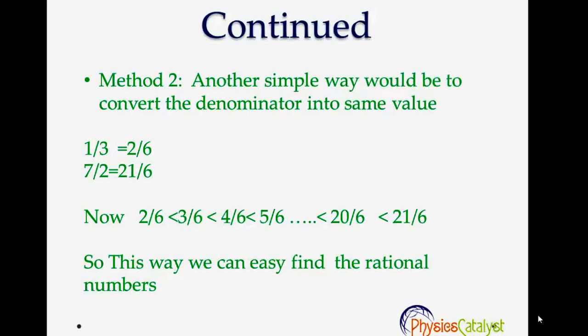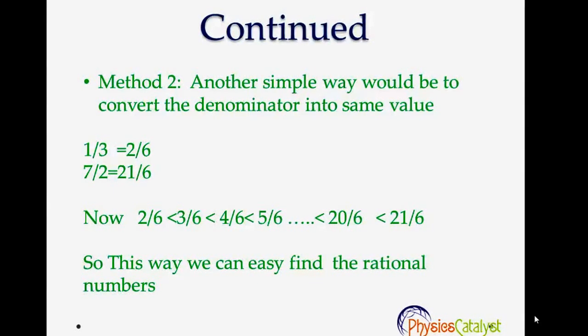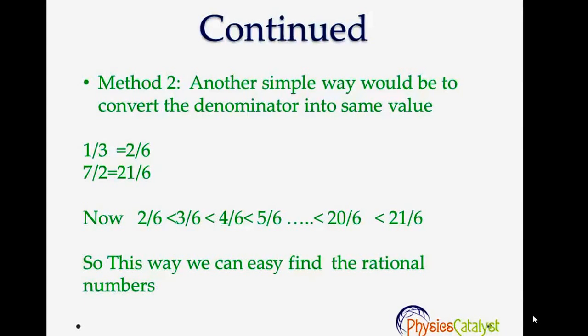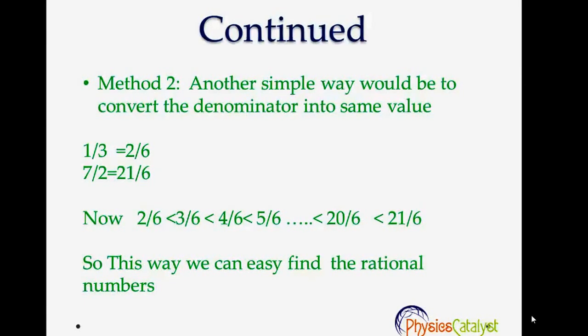Another method is we can convert the denominators into the same value. So the denominators here are 2 and 3. The lowest common multiple of 2 and 3 is 6. So let us convert them into the lowest common multiple.